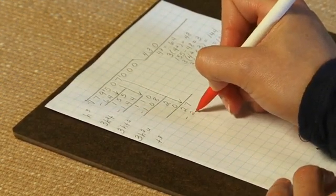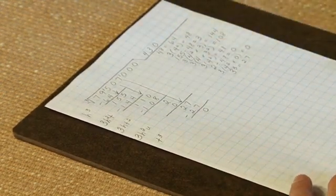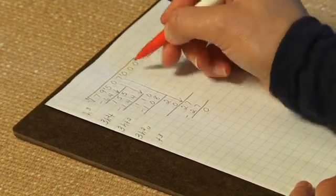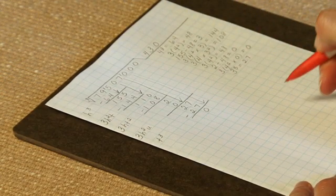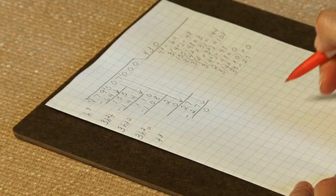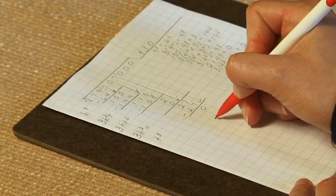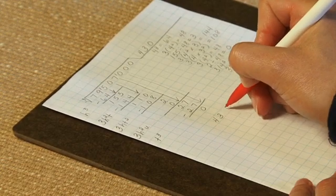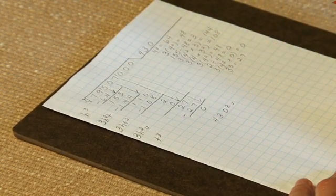27 minus 27 is 0, and then I can bring down the next number, which is also 0. And the students can tell me that the rest of them are going to be 0, so there's no need to continue to build. We have built our cube, and we have 430 being the cube root of 79,507,000.